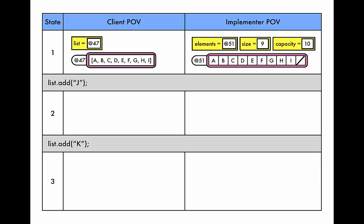Size and capacity are the other fields that the implementer sees. The size of 9 corresponds to the length of the list abstraction. It also tells us that the first nine elements in the array are the important ones. And capacity corresponds to the length of the elements array. It tells us how many elements the list can hold before the array is maxed out and we have to take drastic action.